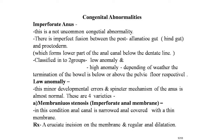The low anomalies are major developmental errors, but the sphincter mechanism of the anus is almost normal. There are four varieties: first, membranous stenosis (imperforate anal membrane); second, covered anus; third, stenosed anus; fourth, ectopic anus; and also anal agenesis. All these are covered under low anomalies.